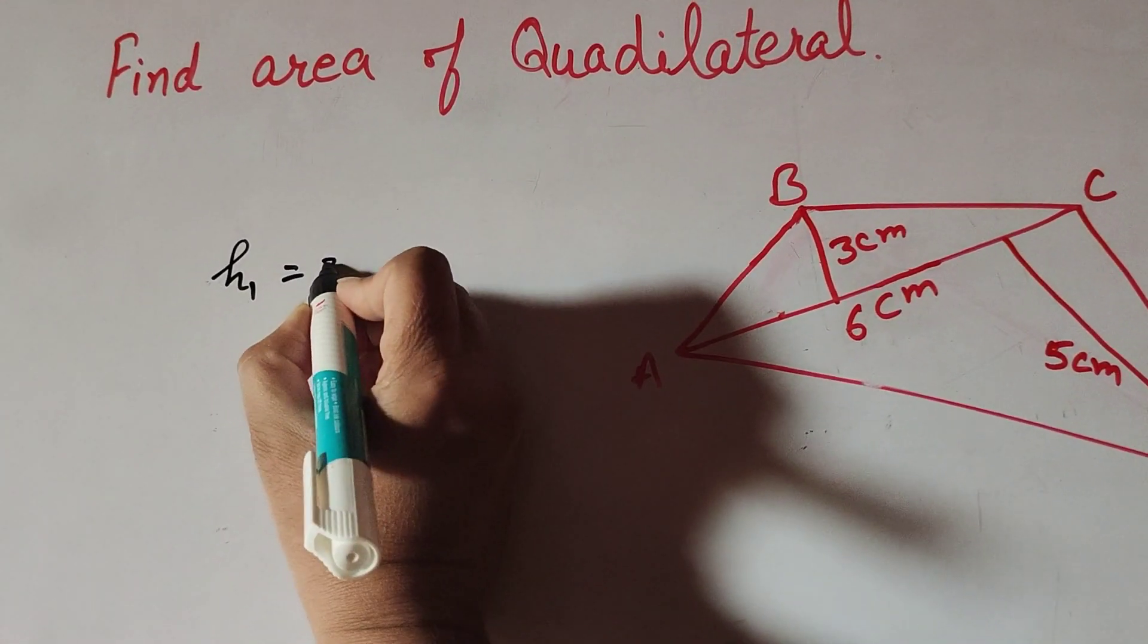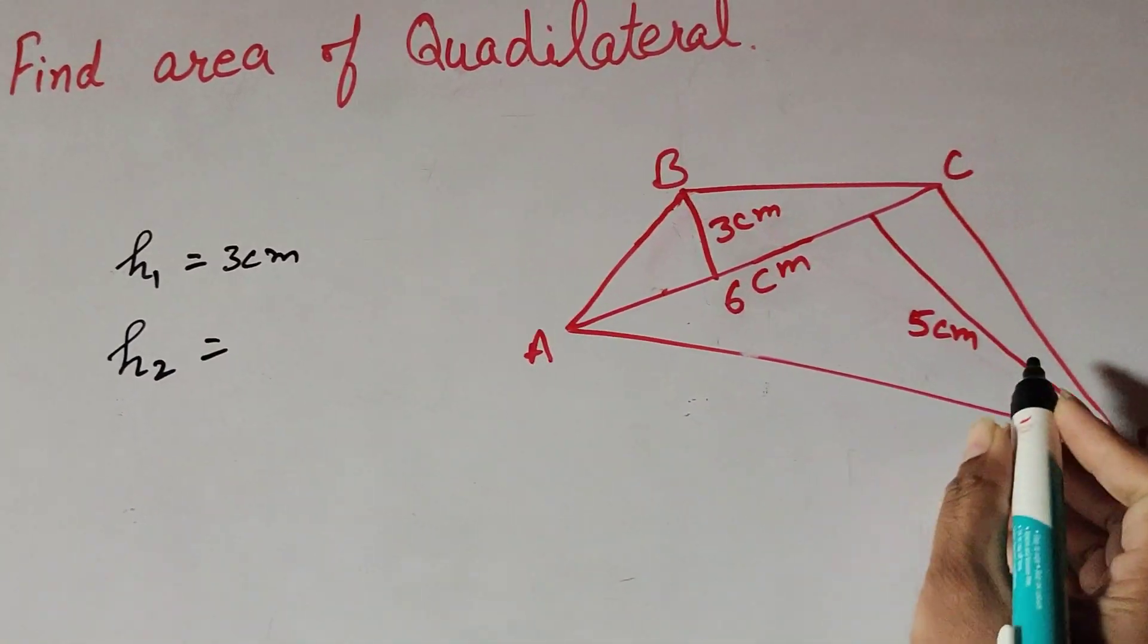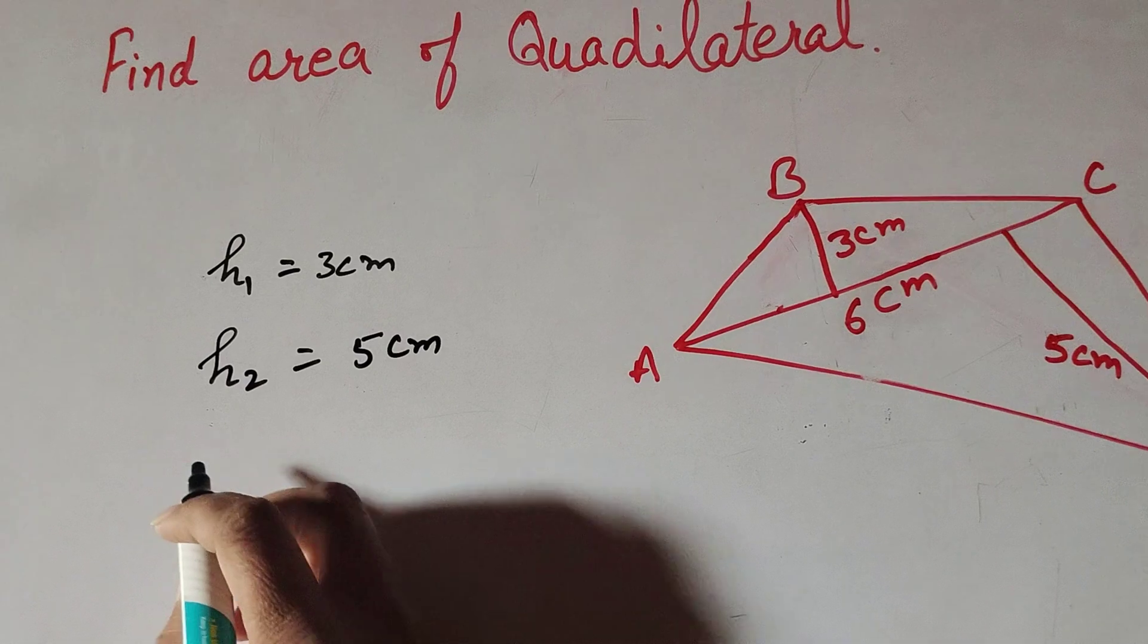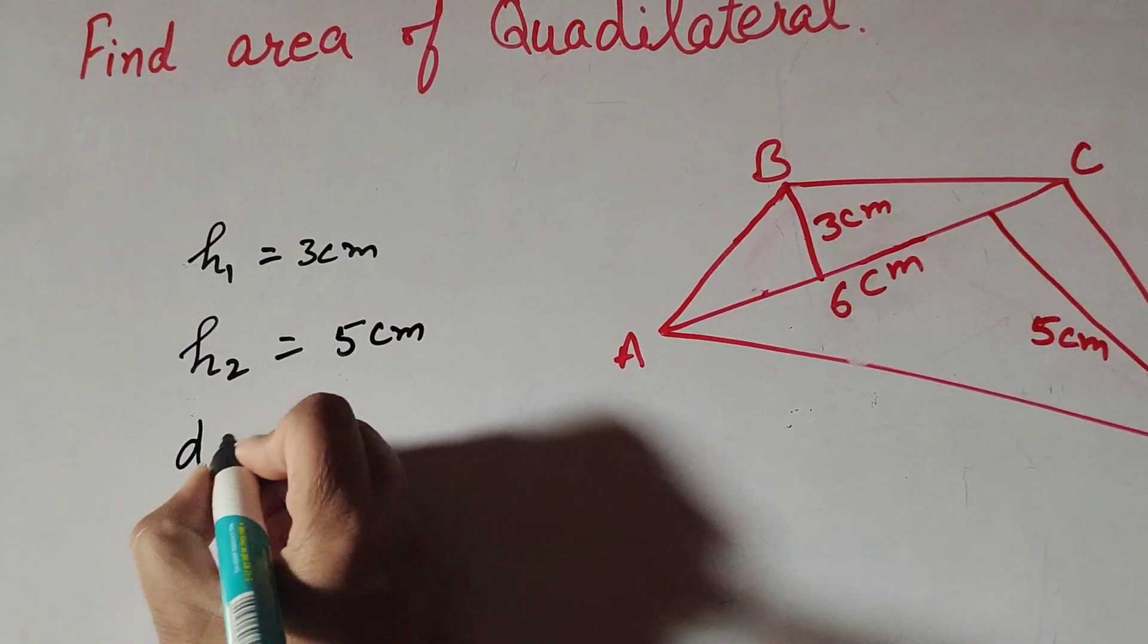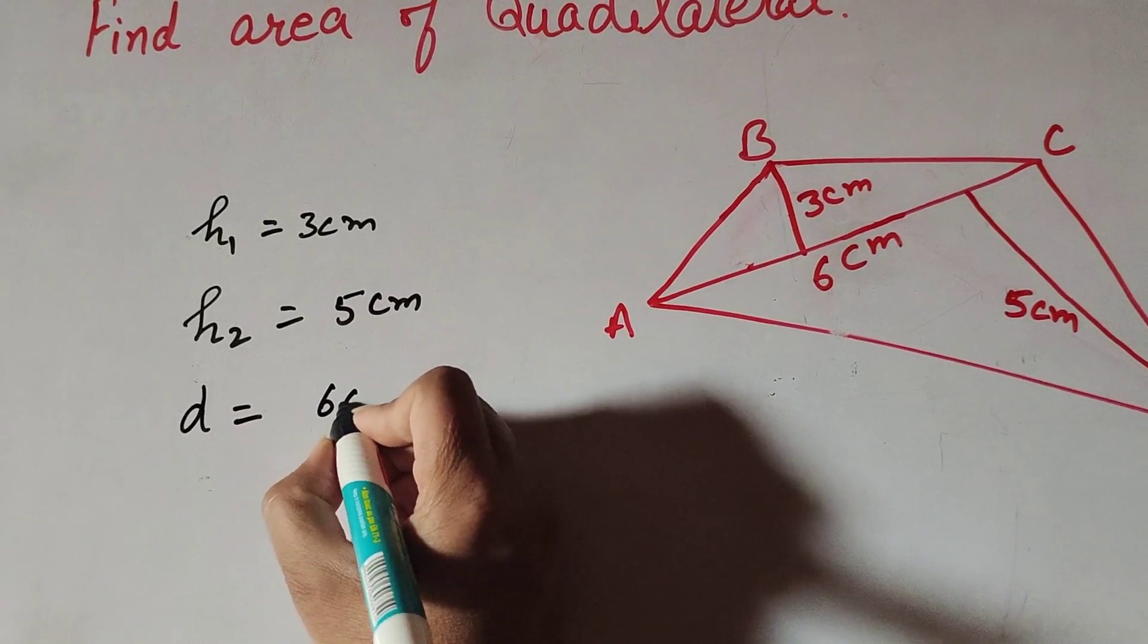We say it is h1, which is equal to 3 centimeter. And h2, the height of the perpendicular on the given diagonal, is 5 centimeter. And d, the diagonal, is 6 centimeter. The length of diagonal d is equal to 6 centimeters.